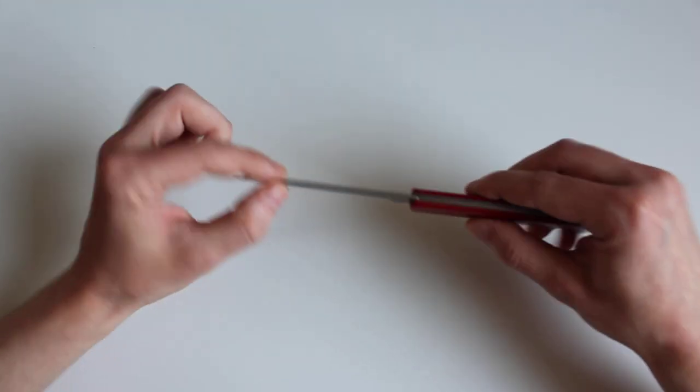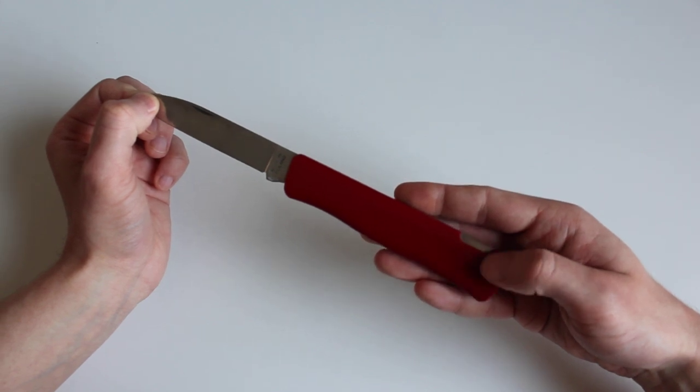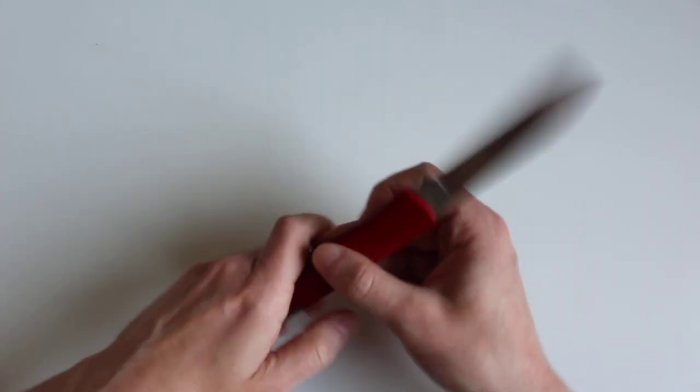Full flat grind with no blade play. The handle is made of red Cellidore, the same material as Victorinox pocket knives' backlogs.